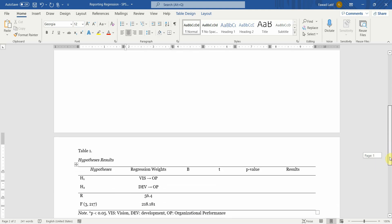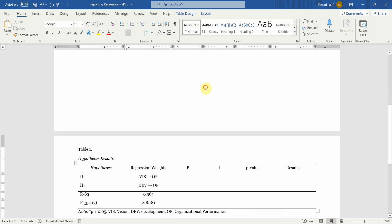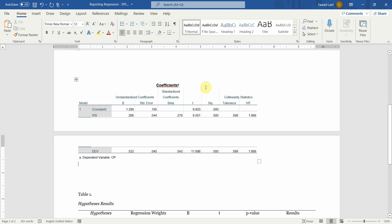56.4, and this is your R square or you can mention 0.564. And again the beta value, the t-value and the p-value.